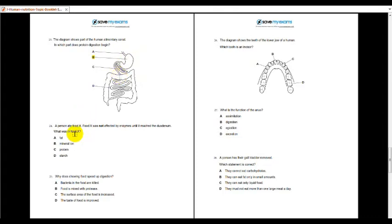24, what was in food X? X not affected by enzymes until it reach duodenum. So as what we know, if it's protein, it must be digested in the stomach and completed in the ileum. If it's carbohydrate, it would be digested in the mouth and completed in the ileum. If it's fat, then only it's being processed in the ileum, in the duodenum. So it is fat. Number 25, why does chewing food speed up digestion? So the same question. So this is the answer.